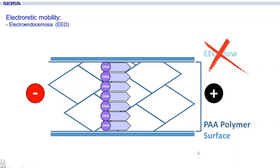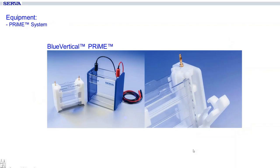PA gels win over agarose with fast migration and very sharp banding. For DNA on PA gels, there is no need for special equipment — every vertical protein electrophoresis chamber will do. For example, our Prime chamber, shown here, with a 100% leak-free, unique and easy-to-handle closure — it's like a snap-in mechanism.